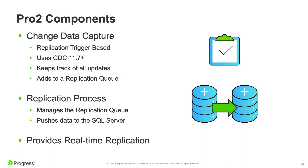There are two components to Pro2: a change data capture piece, and a replication process. For versions below 11.7, it's replication-trigger-based; for 11.7 and above, it uses CDC. The change data capture portion keeps track of all updates and adds to a replication queue table. This is a lightweight table — we're not copying the record, just a pointer with the date and time of the change, the operation type (create, update, or delete), and a pointer back to the source row.